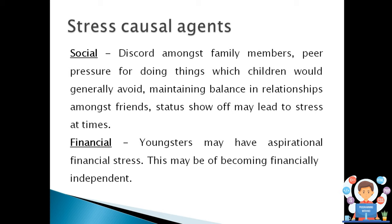Social agent: discord among family members, peer pressure for doing things which children would generally avoid, and maintaining balance in relationships with friends are all sources of social stress. Financial agent: youngsters may have aspirational financial stress, such as wanting to become financially independent — perhaps because they do not want to tell their parents where they are spending money — which also becomes a basic financial stress.